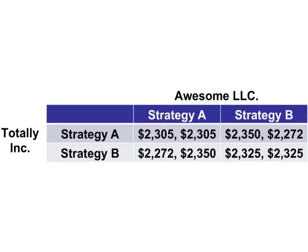In the diagram, Totally Ink's dominant strategy is Strategy A. If Totally Ink plays Strategy A, the payouts are $2,305 or $2,350. Comparing that to Strategy B: $2,272 is less than $2,305, and $2,325 is less than $2,350. So regardless of what Awesome LLC decides to do, Totally Ink is best off playing Strategy A — that's their dominant strategy.